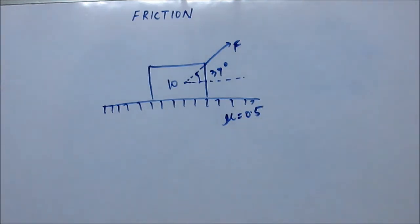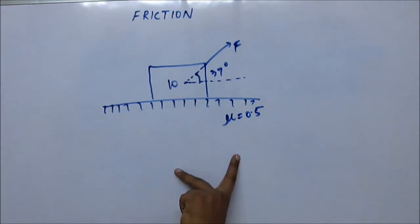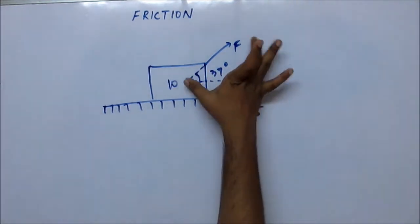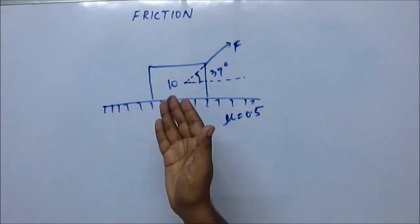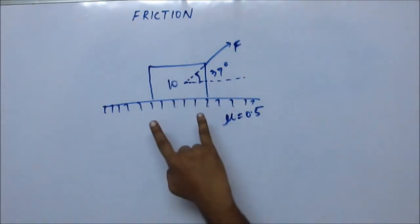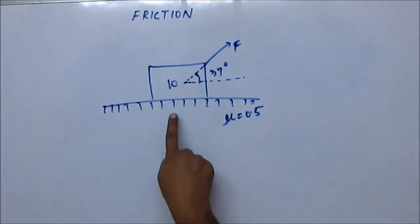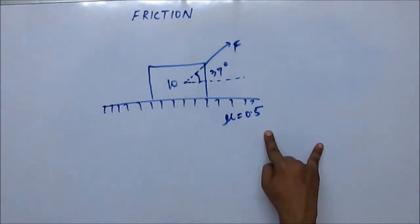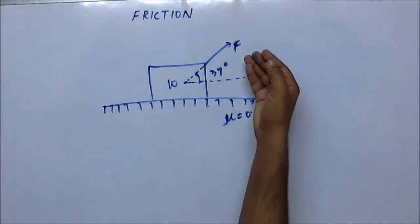Now the simple question here is: will this block be lifted first or will this block be slipped on the surface? Both can be possible, right? You have an external force with a horizontal component and a vertical component. The vertical component will try to lift the block upward, horizontal component will try to drag the block horizontally. So which is going to happen first?